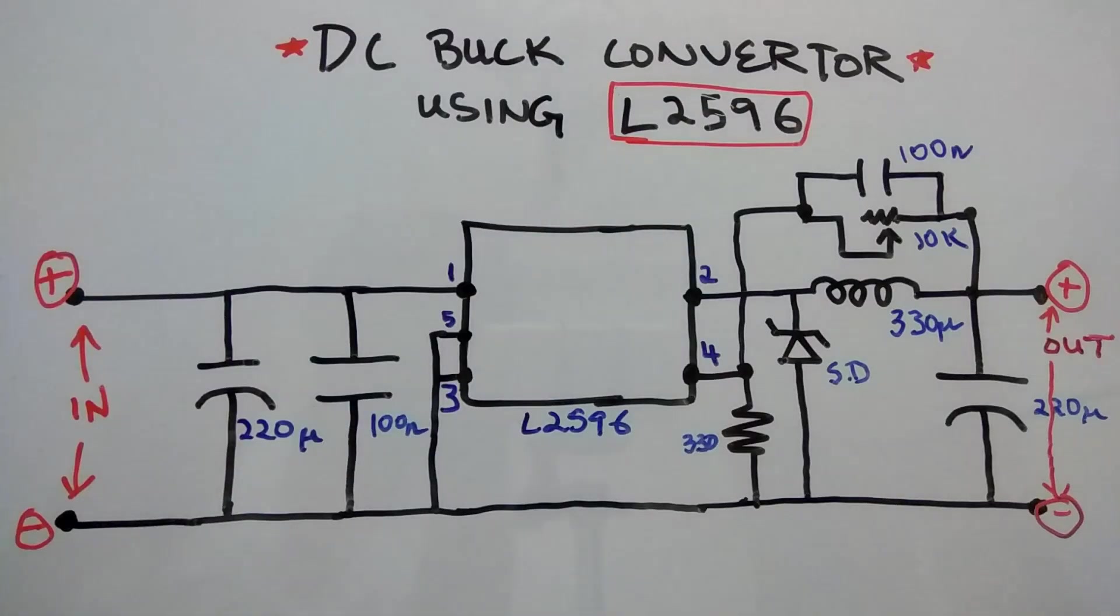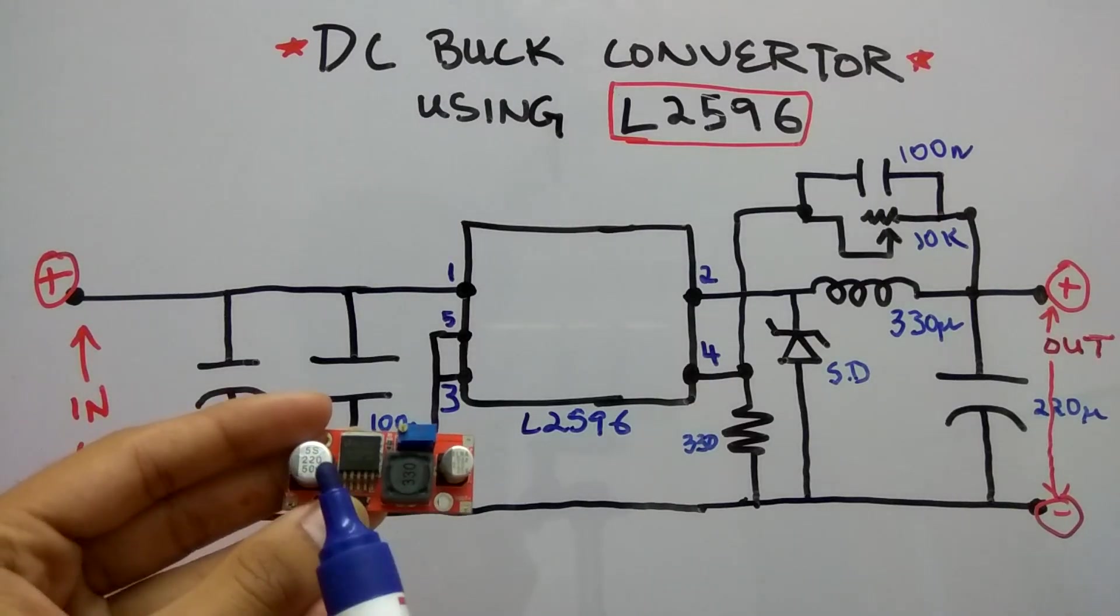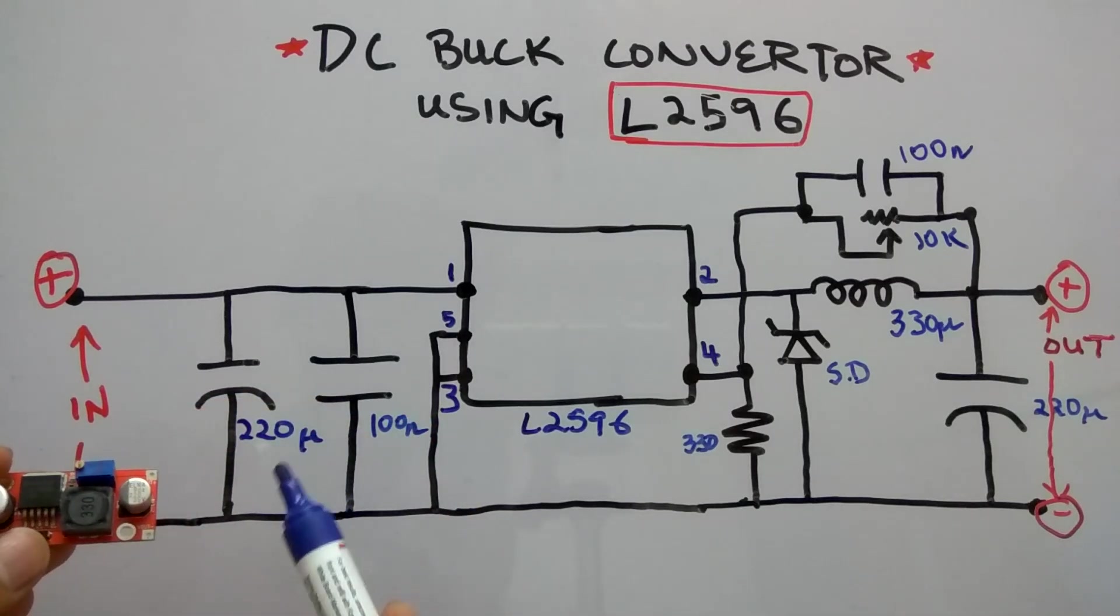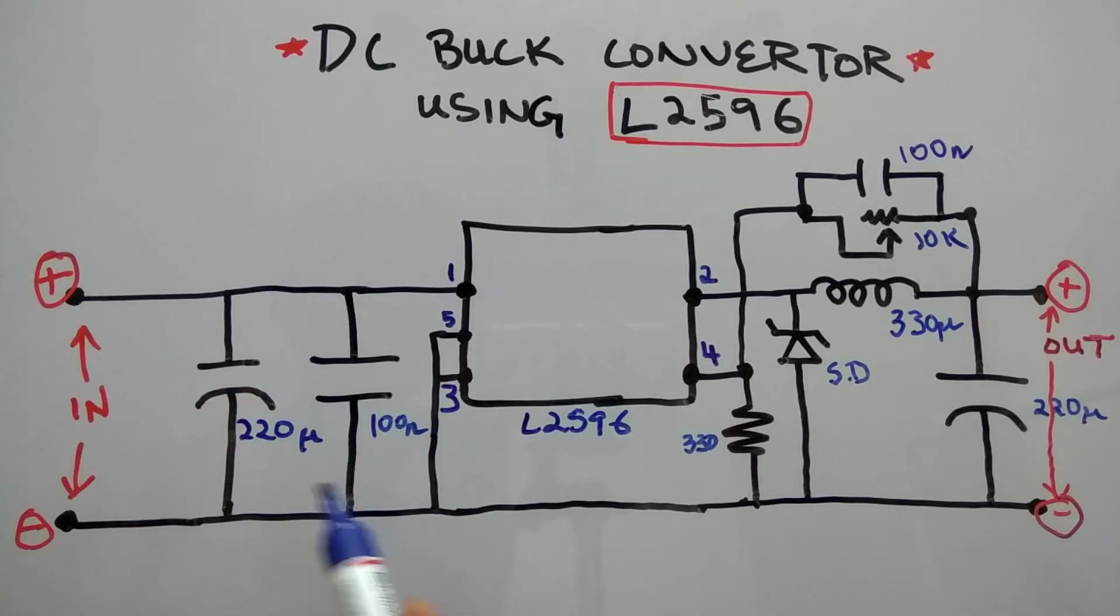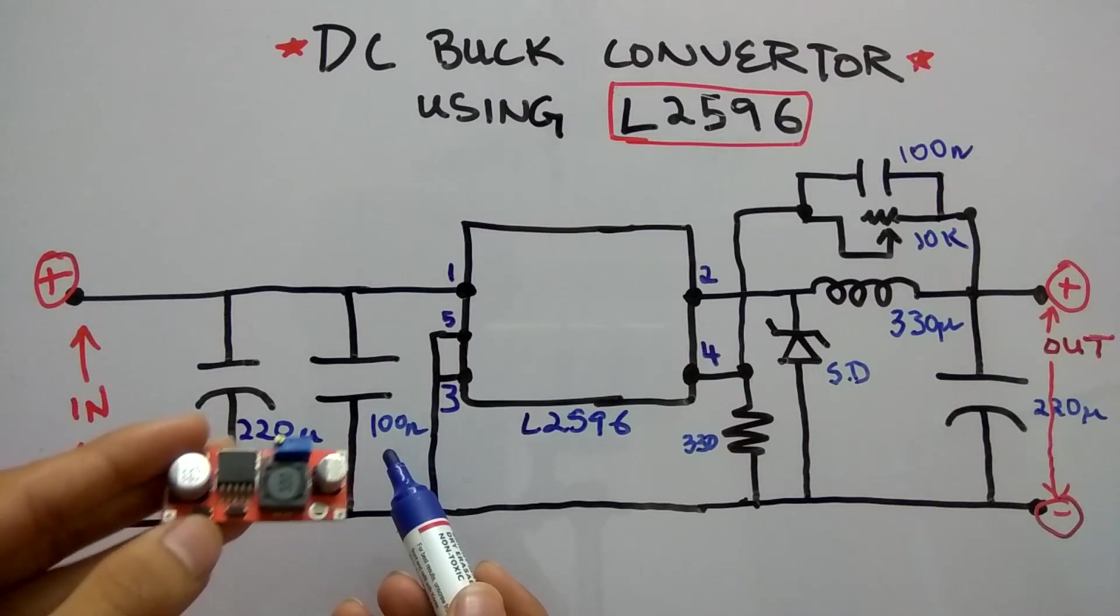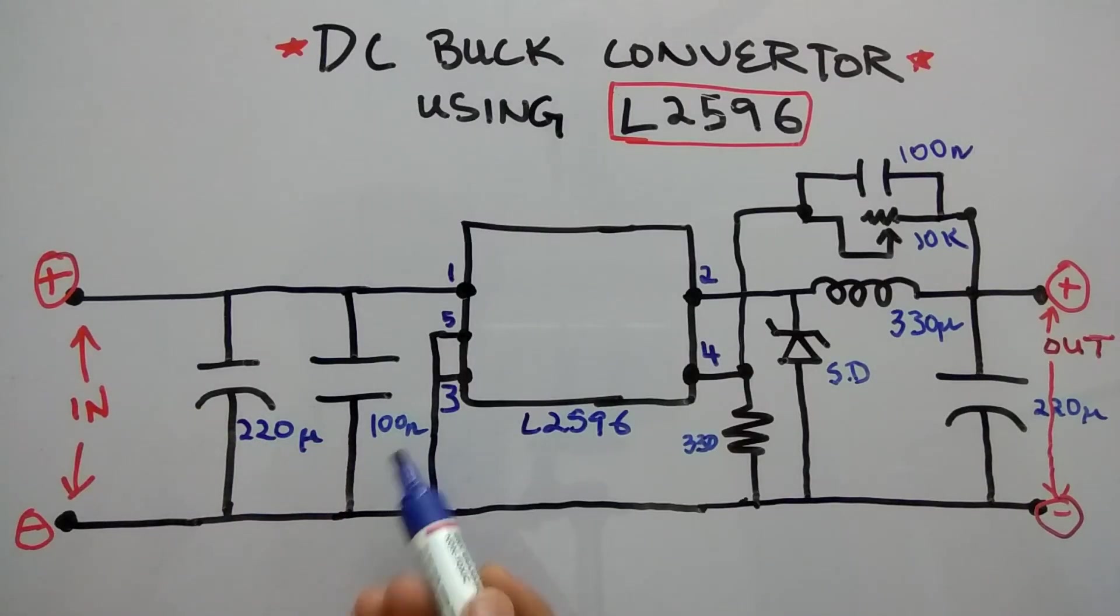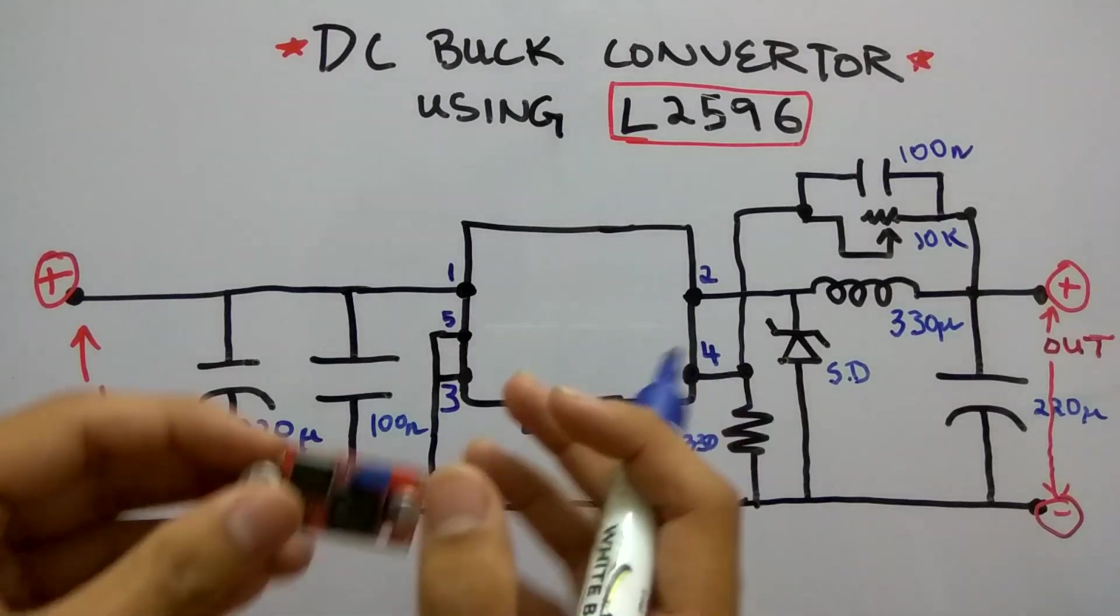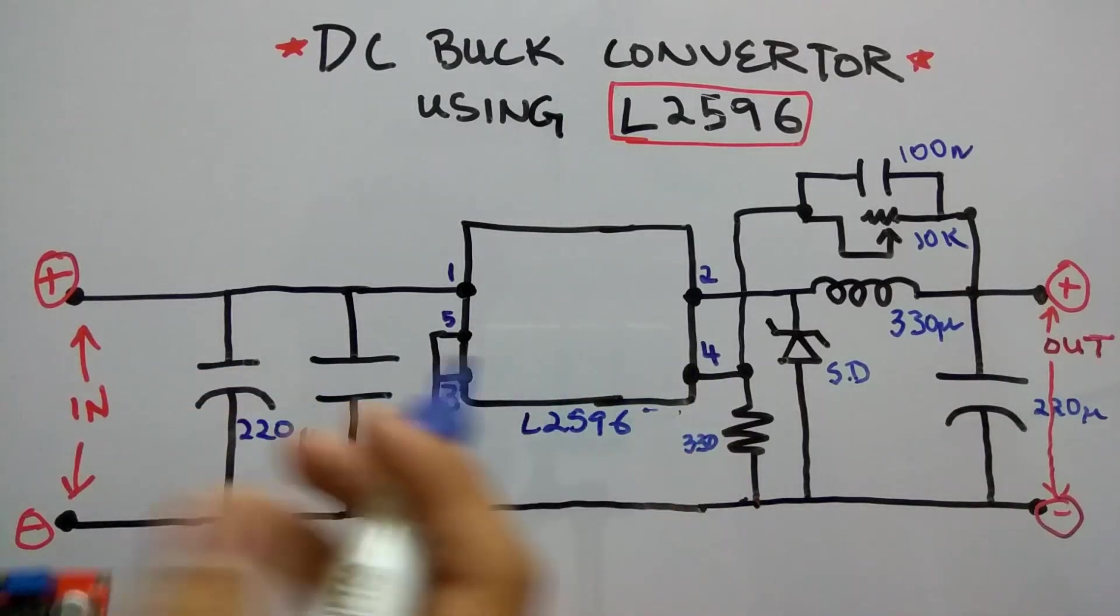So let's understand the circuit and how the L2596 works. This is the input terminal. There are two input capacitors - one 220 microfarad 50 volt electrolytic capacitor and a 100 nanofarad ceramic capacitor in parallel to this.